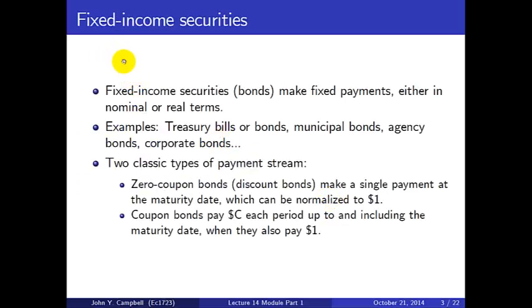So what are fixed income securities? I'll use the word bonds to describe them for short. Fixed income securities make fixed payments, where a promise is made in advance — you know what you're supposed to be paid. These fixed payments can be specified either in nominal terms or in real terms, and we'll talk more about real or inflation-indexed bonds in a couple of lectures. Examples include US Treasury bills or bonds, municipal bonds, agency bonds, and corporate bonds — we've discussed those earlier in the semester.